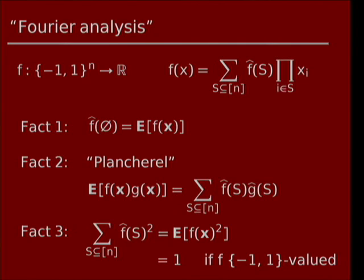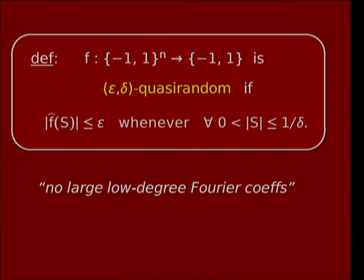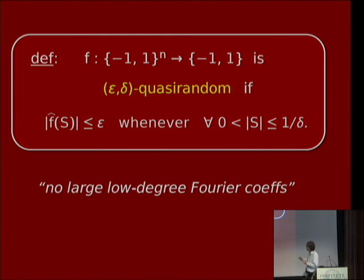With these definitions in hand, I can give a formal quantitative definition of quasi-randomness. It involves two parameters, epsilon and delta. We say such a function is epsilon-delta-quasi-random if all of the Fourier coefficients are smaller than epsilon in absolute value for subsets S of cardinality strictly positive and less than 1 over delta. Roughly speaking, it's saying there are no large, low-degree Fourier coefficients, except possibly the empty one representing the expectation or bias of the function.